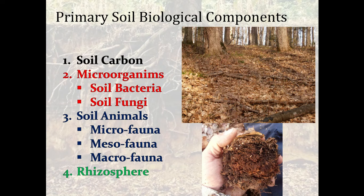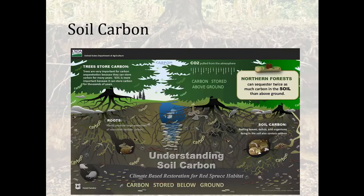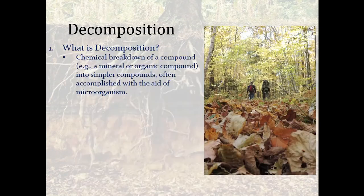The primary soil biological components are soil carbon, microorganisms, macro organisms or soil animals, and the rhizosphere. Soil carbon drives a lot of nutrient availability for plants and animals. Notably, forests are able to sequester twice as much carbon below the soil as they are above it. So while growing and preserving forests is important, their ability to store carbon in the soil for long-term cycling is also a critical aspect of carbon sequestration.